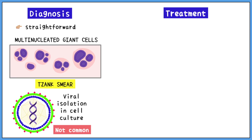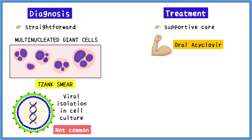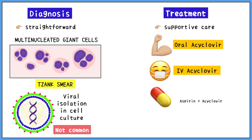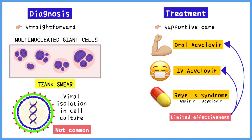For the treatment of VZV infections, supportive care is the best option. In healthy individuals, oral acyclovir can be prescribed. In immunocompromised patients, IV acyclovir may need to be administered. It is important to remember that aspirin should not be prescribed with acyclovir, as there is a risk of Reye's syndrome. While treating varicella zoster infections, acyclovir has limited effectiveness, due to the fact that the virus is not as dependent as HSV on viral thymidine kinase for its replication.